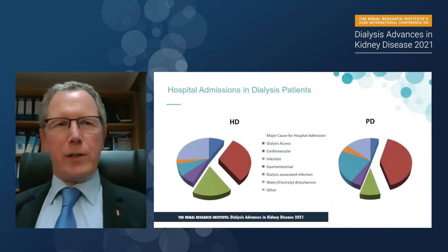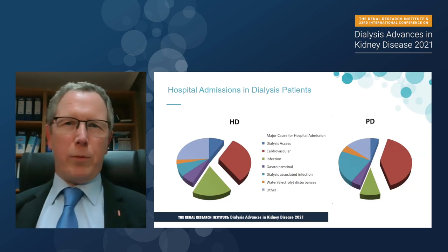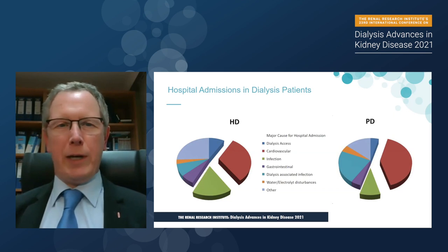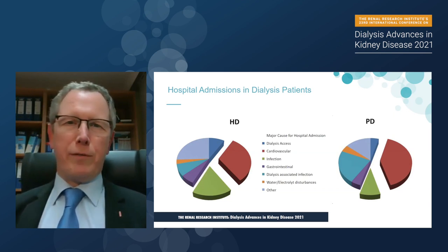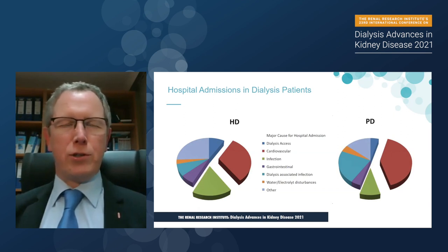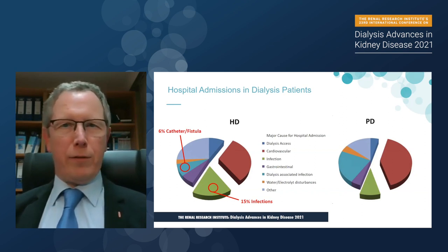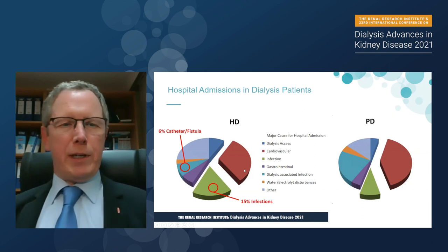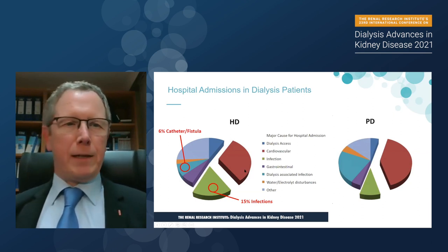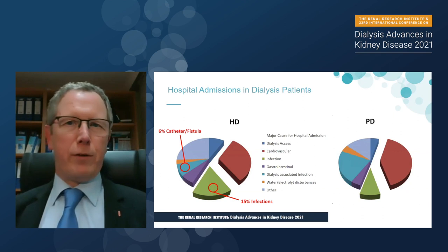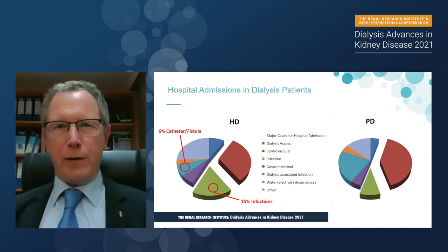We did a study several years ago. Part of this study was to register what the hospital admission causes for patients on hemodialysis and peritoneal dialysis were. You can see here the analysis — there were different causes of hospitalization. There were 15% of hospitalizations caused by infections, and another 6% by infections of the catheters or the fistula. So more than 20% of hospitalizations were caused by infectious complications.